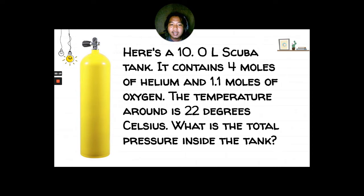Here's a 10.0 liter scuba tank. It contains, we don't call it oxygen tank because it's not purely oxygen. It contains 4 moles of helium and 1.1 moles of oxygen. The temperature around is 22 degrees Celsius. What is the total pressure inside the tank? It's a bit tricky because there's no total pressure or partial pressure given, but we are asked for the total pressure inside the tank.